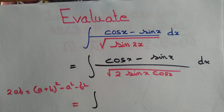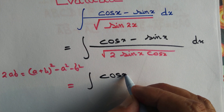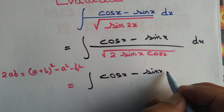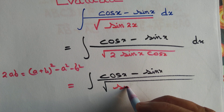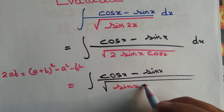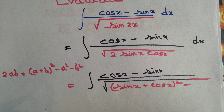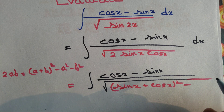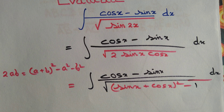Once again we copy the numerator as it is: cos x minus sin x. For the denominator, we write it as (a + b)² minus a² minus b², which gives us (sin x + cos x)² minus sin²x minus cos²x. But sin²x plus cos²x equals 1, so this simplifies to (sin x + cos x)² minus 1.